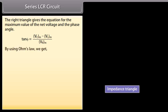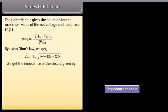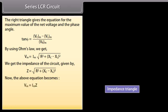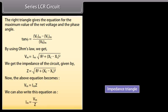By using Ohm's law, we get Vm = Im × √(R² + (Xc − XL)²). The impedance of the circuit is given by Z = √(R² + (Xc − XL)²). The equation becomes Vm = Im × Z, or equivalently Im = Vm / Z, and I_rms = V_rms / Z.